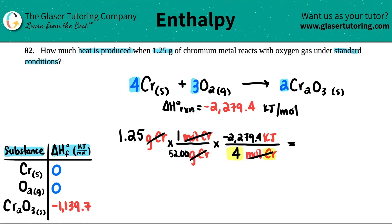1.25 times 2279.4 divided by 52 and divided by 4. I get a negative 13. How many sig figs? I need three sig figs. So 13.7 kilojoules.